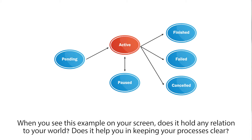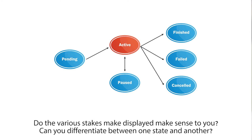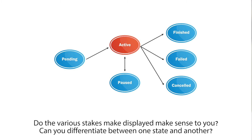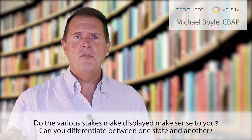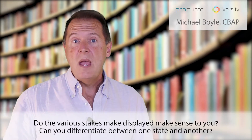When you see this example on your screen, does it hold any relation to your world? Does it help you in keeping your processes clear? Do the various states make sense as they're displayed here on the screen? Can you differentiate between one state and another?